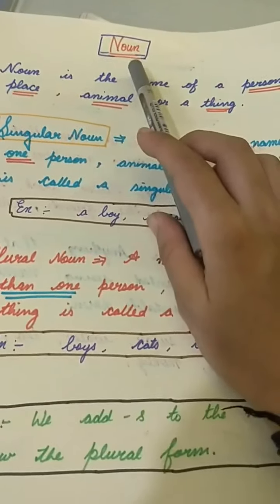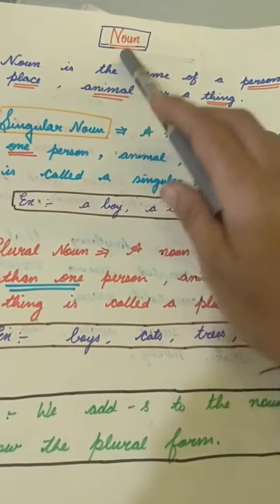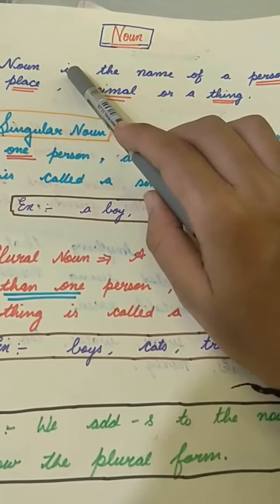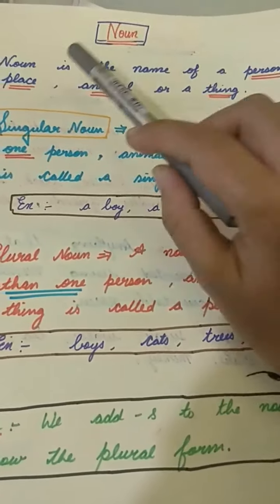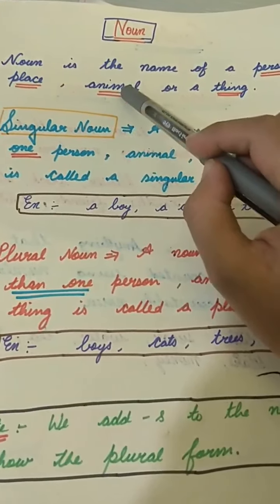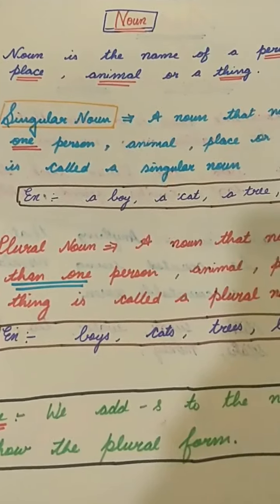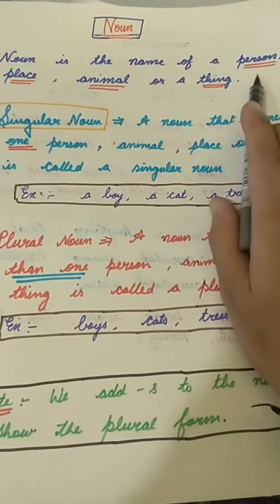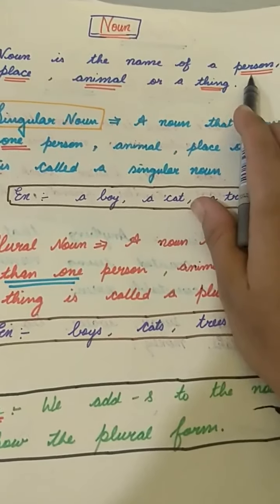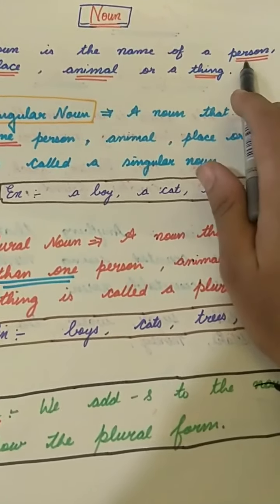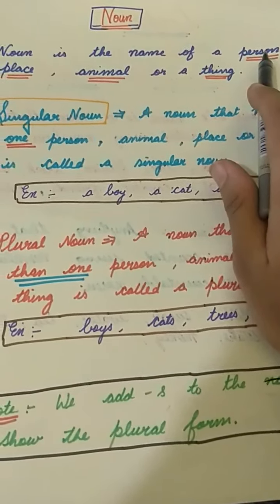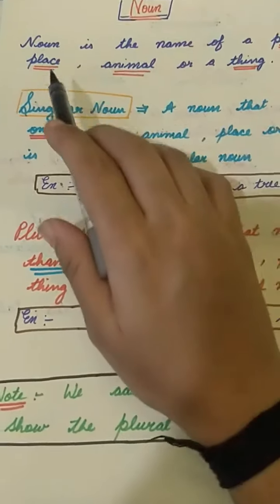Now let's start with the new topic. The topic is noun. What is a noun? A noun is the name of a person, place, animal, or a thing. Noun is the name of a person — what is a person? Person means a human being, means insan. As you all are persons — yes, the living being. Place means any place.